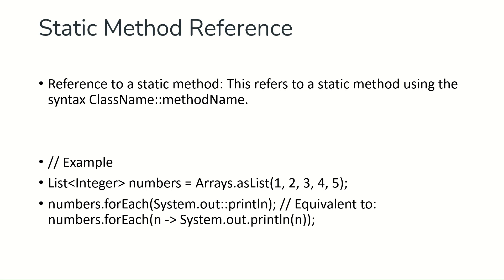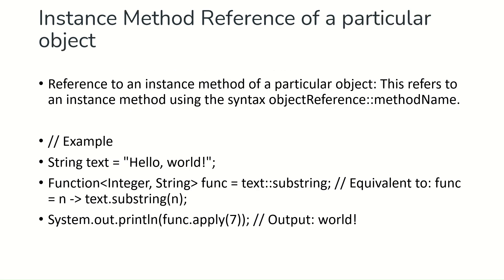Now let's discuss instance method reference of a particular object. This refers to an instance method using the syntax: object reference, double colon, method name. Just as we call an instance method using dot notation on an object, you can call the method using double colon with an object reference. This is the instance method reference of a particular object.